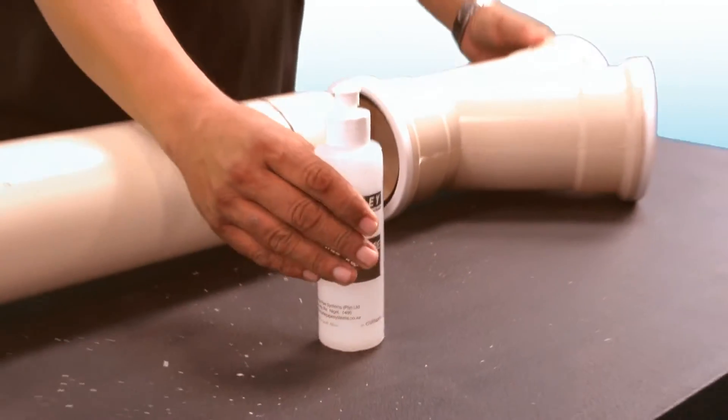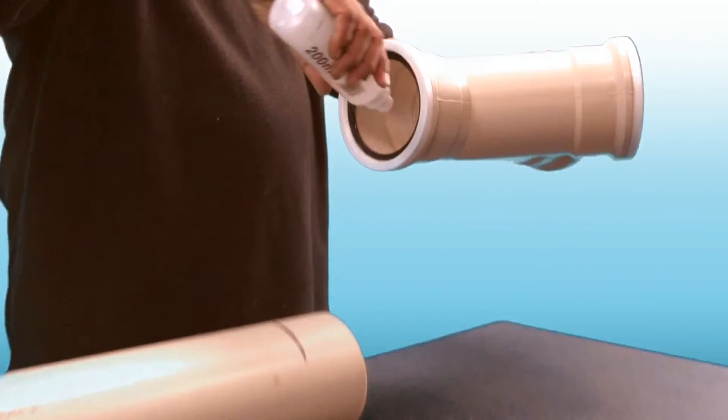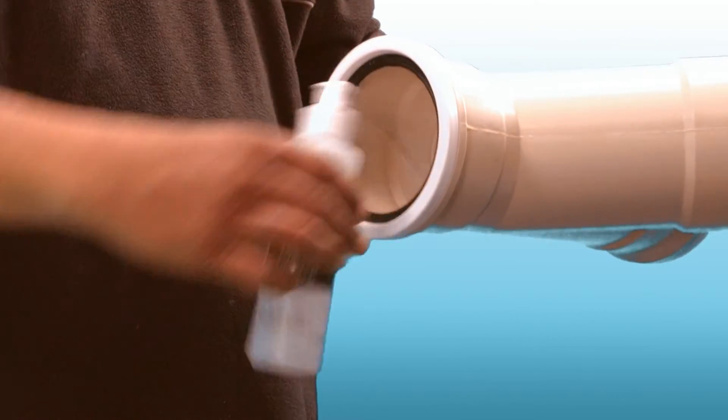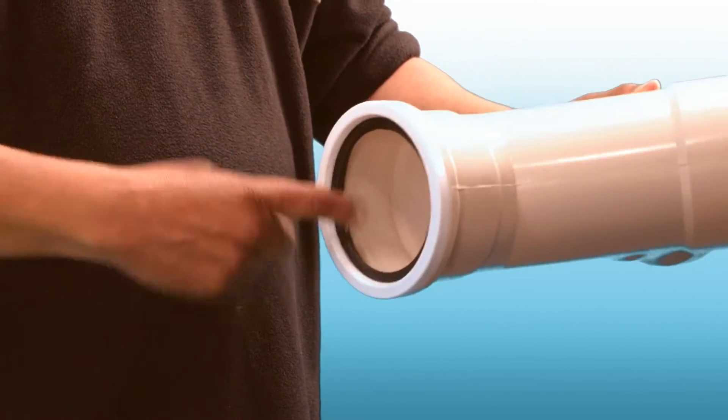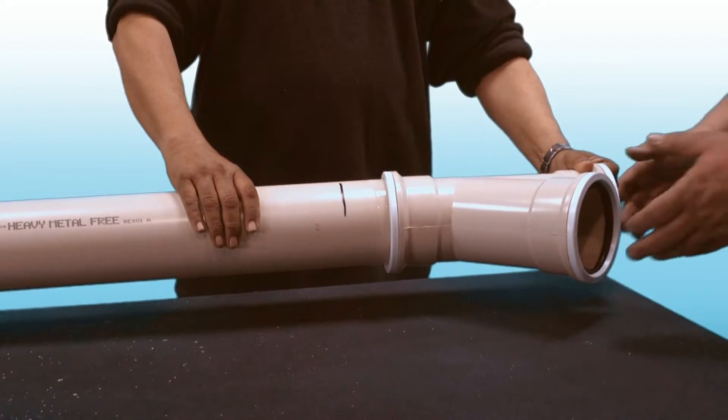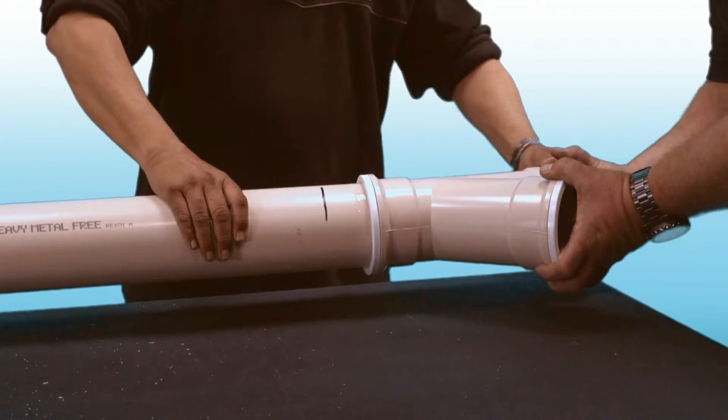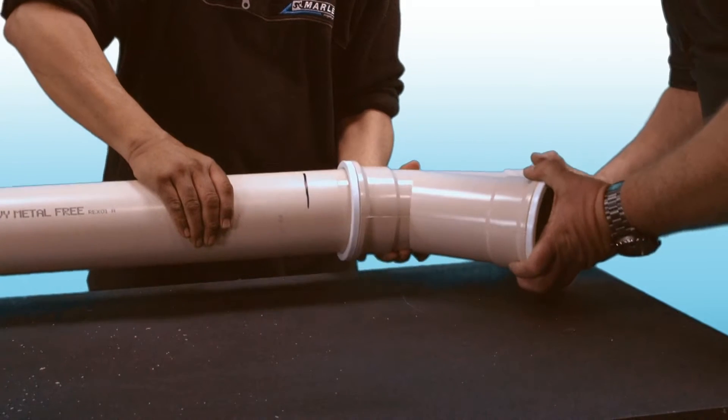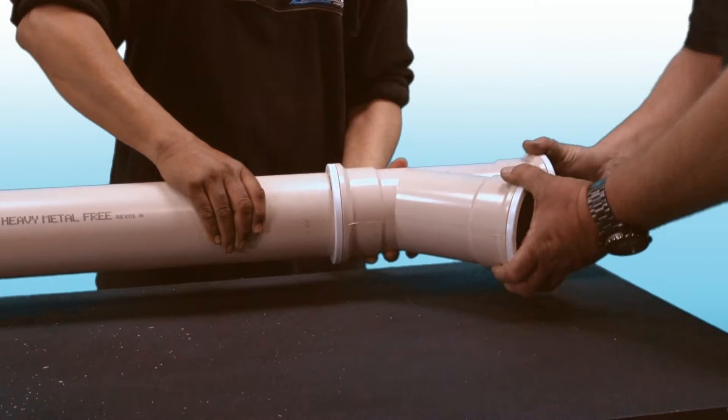Apply a small amount of Marley lubricant to the chamfered spigot end and to the rubber seal ring to ease fitting. Line the pipe or the spigot end up with the socket and push firmly until the insertion depth mark is level with the face of the socket.